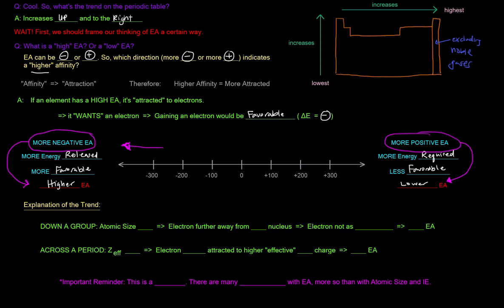Let's explain the trend. If we go down a group, atomic size increases, so the electrons are further away from the positively charged nucleus. The incoming electron is not as attracted to the nucleus because it's further away — that's a lower electron affinity. Across a period, however, the effective nuclear charge increases, so the electron coming in will be more attracted to that higher effective positive charge — thus we have an increase in electron affinity.